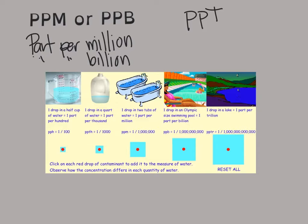I have a graphic here to help you recognize some of the differences. One drop in a half cup of water is one part per hundred. A drop in a quart of water is one part per thousand. One drop in two bathtubs of water is one part per million. One drop in an Olympic-sized swimming pool is one part per billion. And a drop in a lake is one part per trillion.